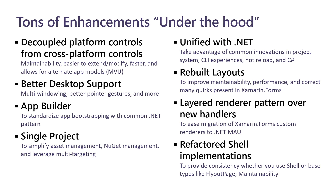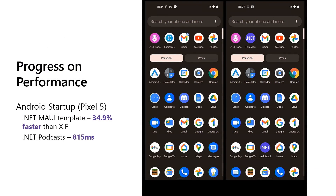You can use third-party packages, you can do them in different app models — if you wanted to do a model-view-update style app instead of MVVM with XAML. Better desktop support: we added Mac as an official platform, and we moved from UWP to WinUI. There's a better app-building pattern, there is a single project instead of multiple projects. I could go into this forever. My favorite thing, though, is it's fast.